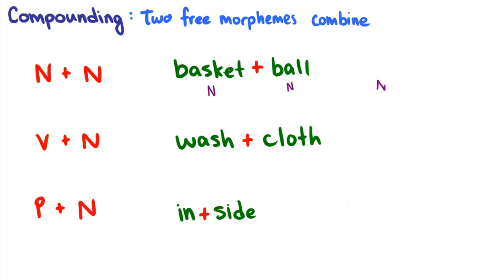So we can actually express these in trees. We can say the noun basket and the noun ball create the word basketball, and that is a noun. So basket is our first noun, ball is our second noun, and that creates the word basketball.